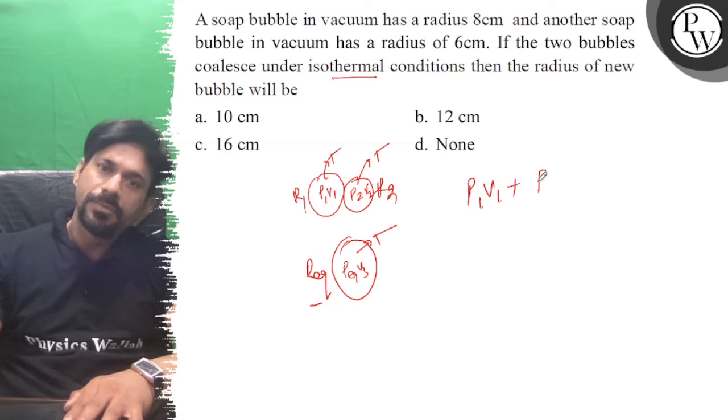p1 v1 plus p2 v2, and that is equal to the final p v.